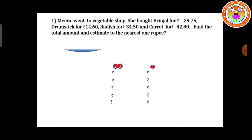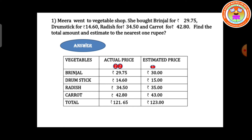Exercise problems. First problem: Meera went to a vegetable shop. She bought brinjal for 29 rupees 75 paise, drumstick for 14 rupees 60 paise, radish for 34 rupees 50 paise, and carrot for 42 rupees 80 paise. Find the total amount and estimate to the nearest 1 rupee. Now we are going to estimate to the nearest 1 rupee.